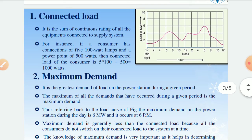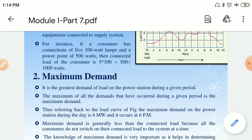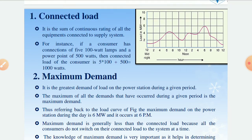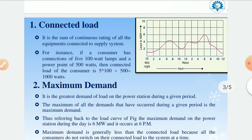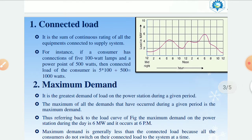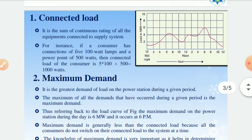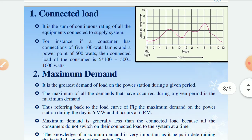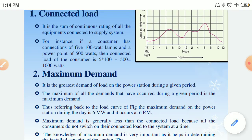We know that we are having different equipments at our home, so surely our connected load will be very high. When we are considering a power station, the load is in megawatts, so the connected load will also be very high — it will be in megawatts, not in watts. Connected load is actually the sum of all continuous ratings of the equipments which are connected to that supply system.